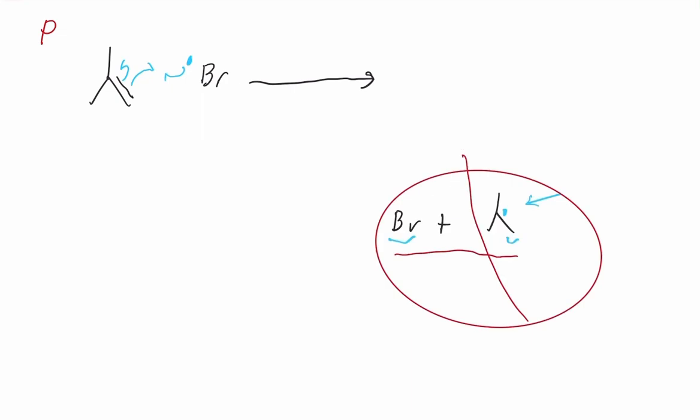Therefore, this bromine should be bound to the position opposite of the newly formed free radical. That is how we end up with the addition of bromine in the anti-Markovnikov fashion.